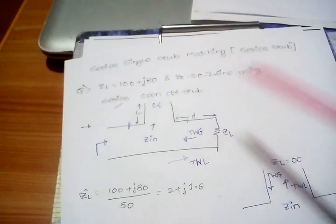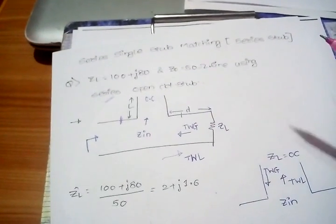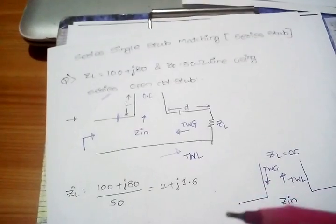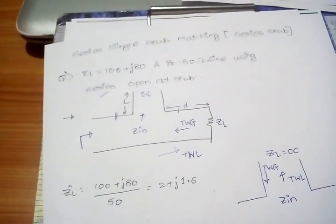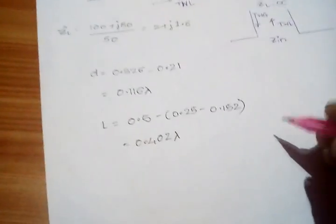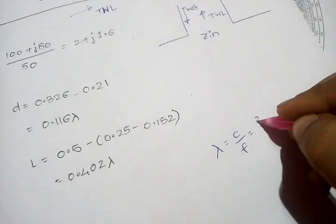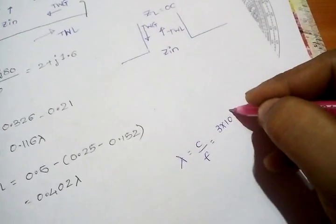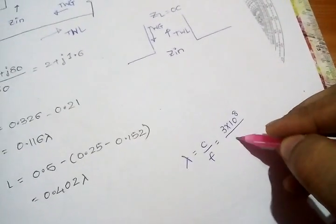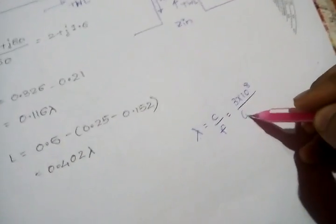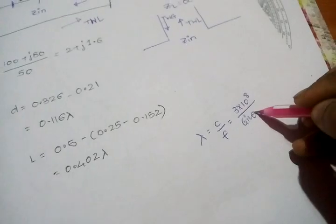We have now solved the series open circuit single stub problem. If in the exam you are given a frequency value — say 500 MHz, 3 GHz, or 5 GHz — the technique is: lambda = c / f, where c = 3 × 10^8 m/s. Calculate lambda and then find the actual physical length by multiplying the fractional lambda value obtained.